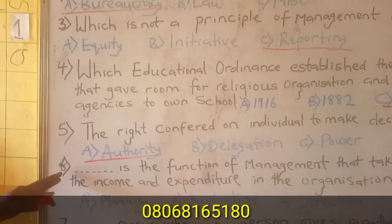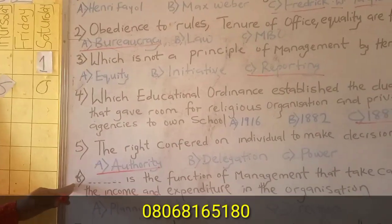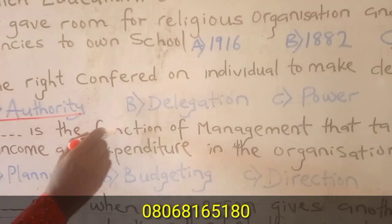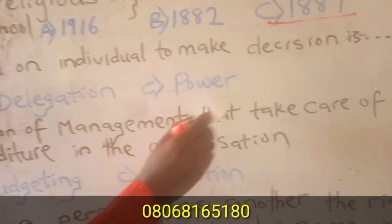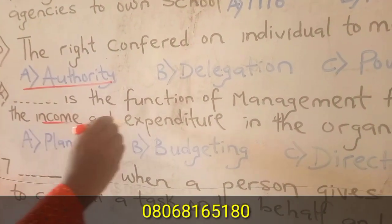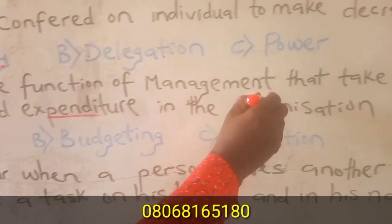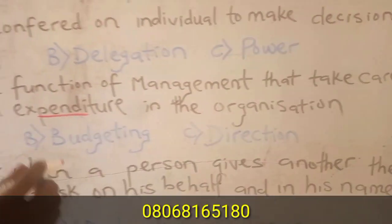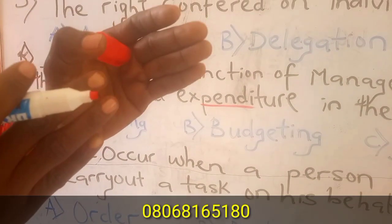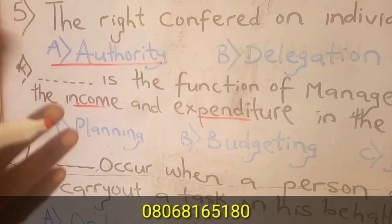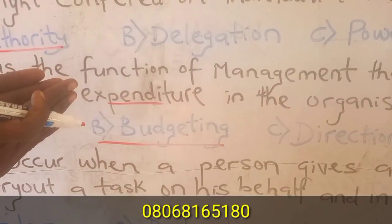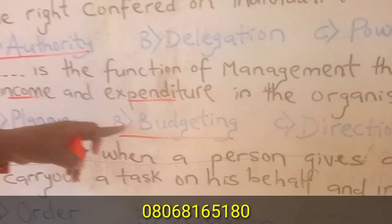Question six: What is the function of management that takes care of income and expenditure in the organization? The function of management that deals with money, cash inflow and cash outflow, is called budgeting. Budgeting deals with the financial estimates of an organization.